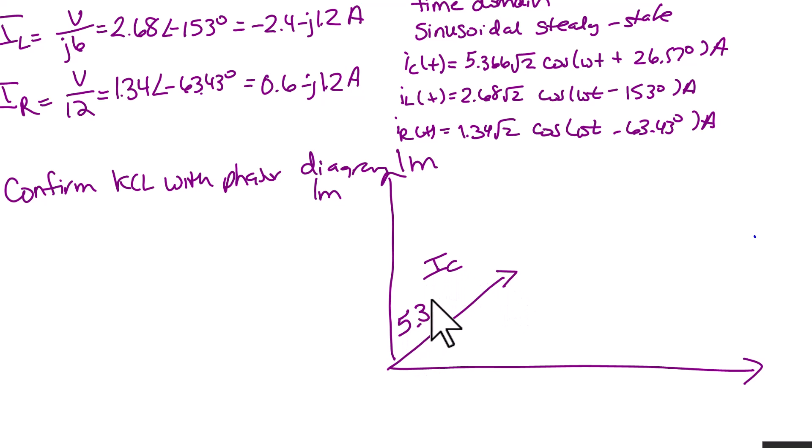So here's our phasor diagram. And our first vector is going to be IC. IC makes an angle of 26.57 degrees with the real axis and has a length of 5.366.